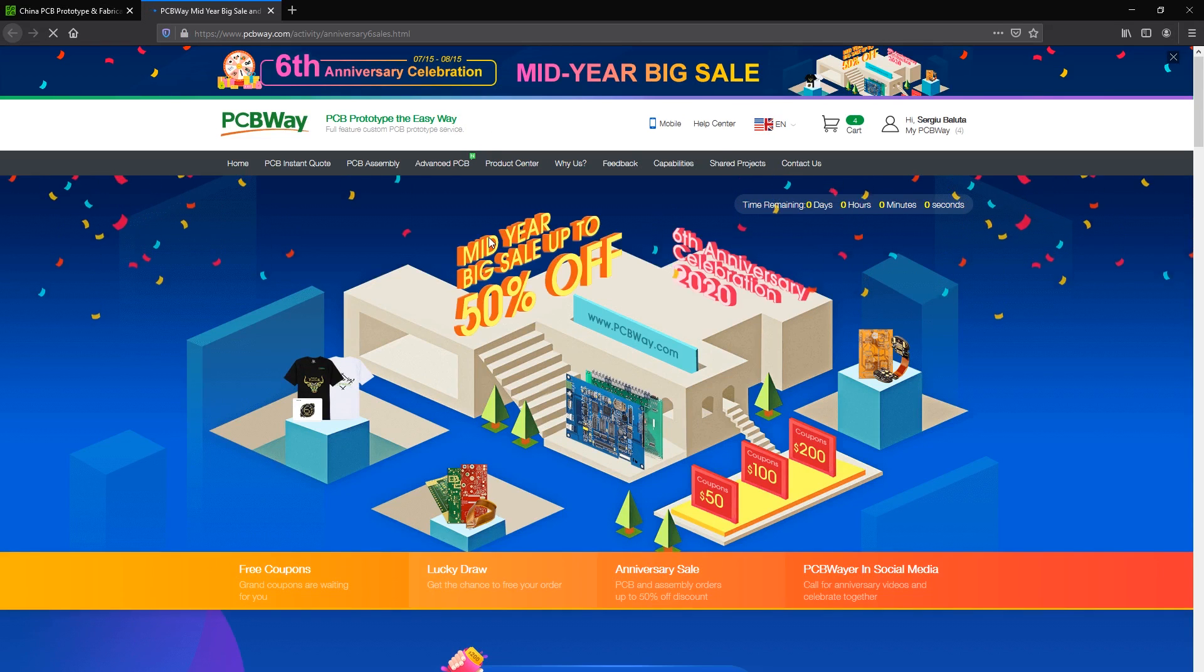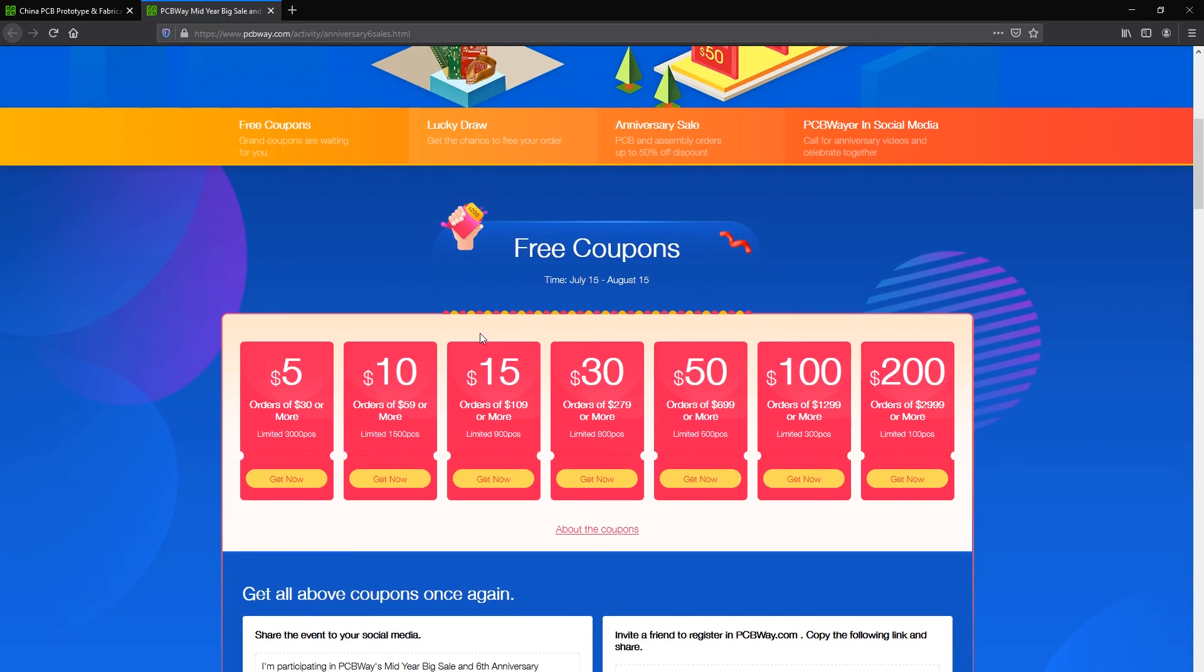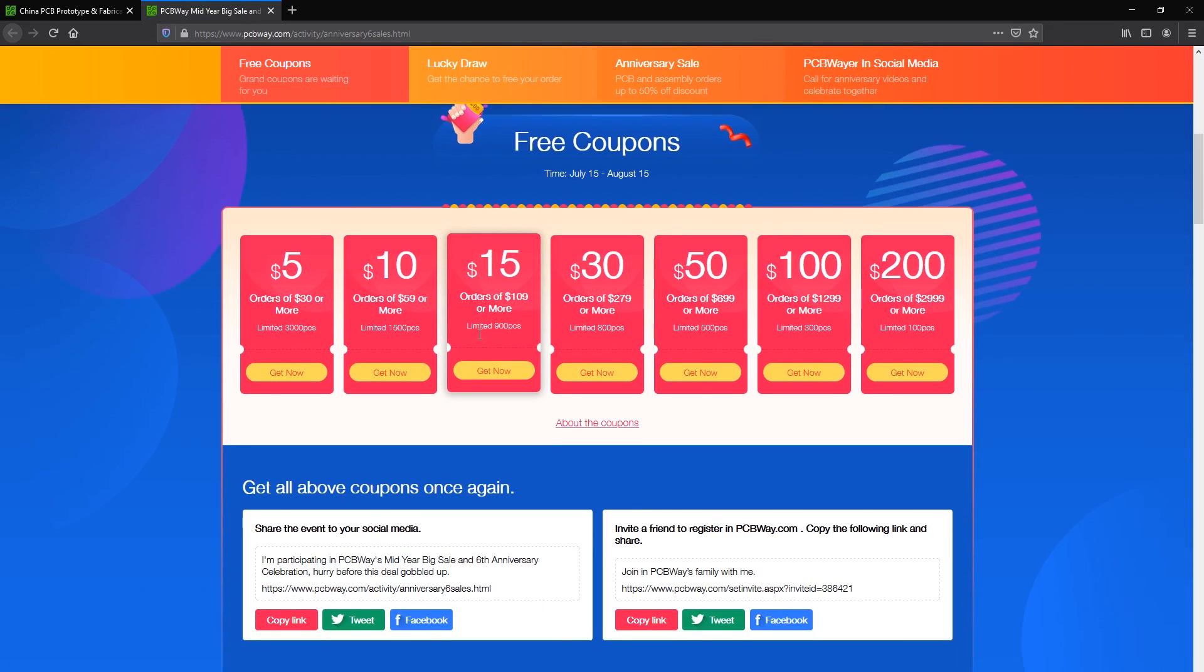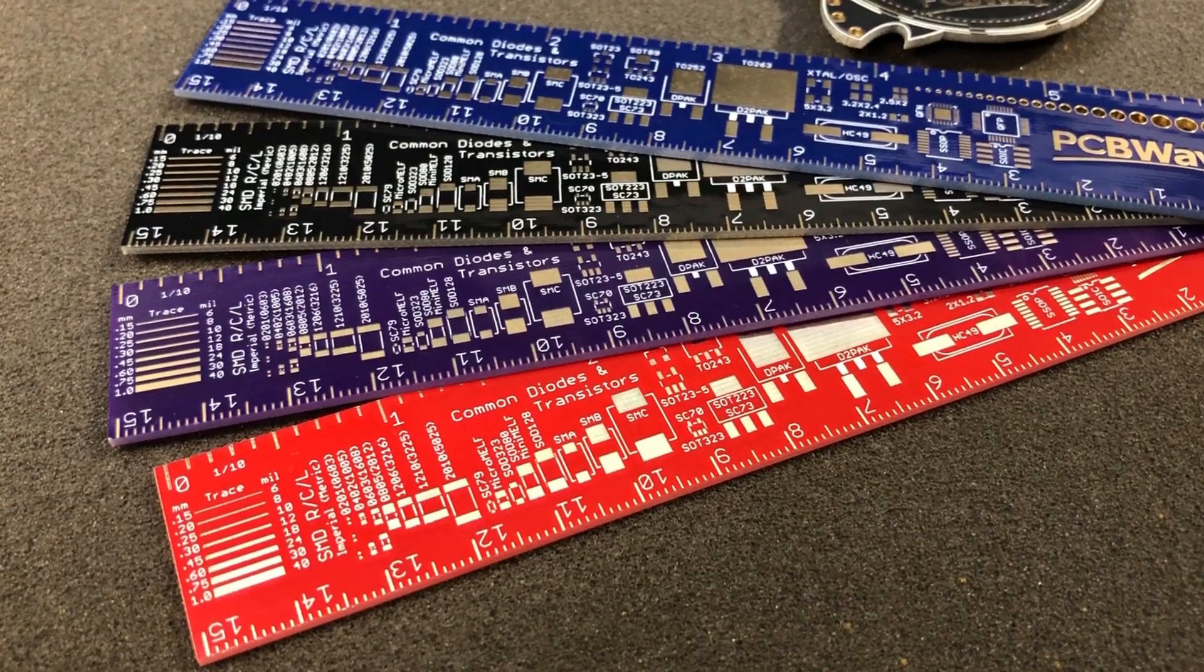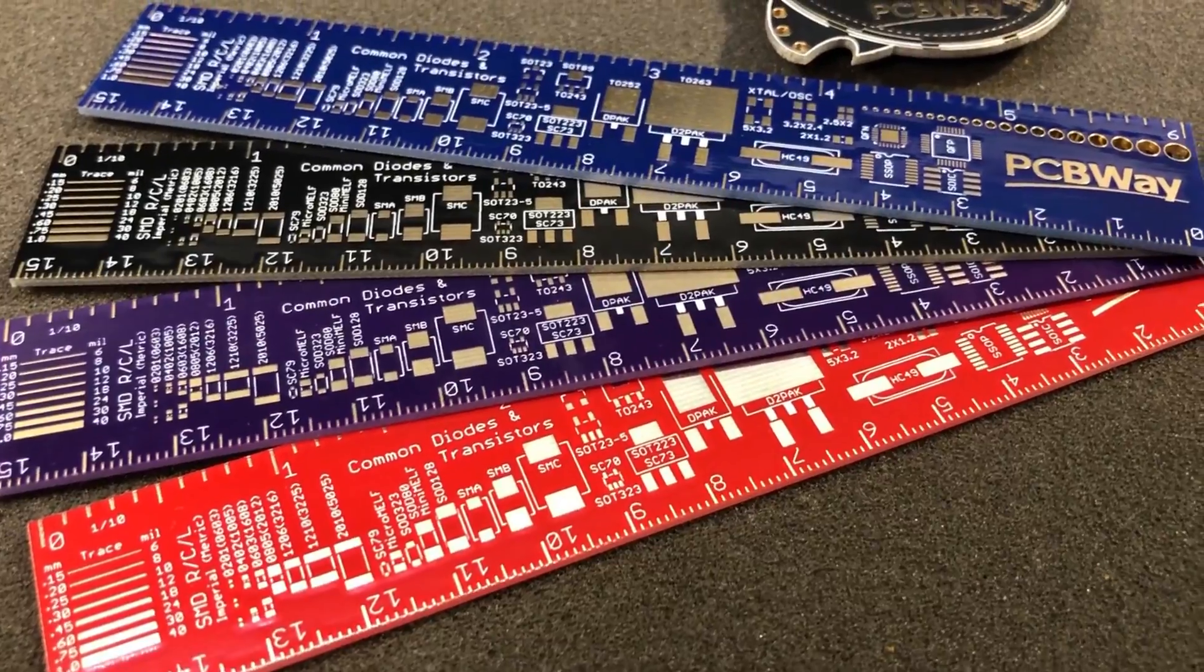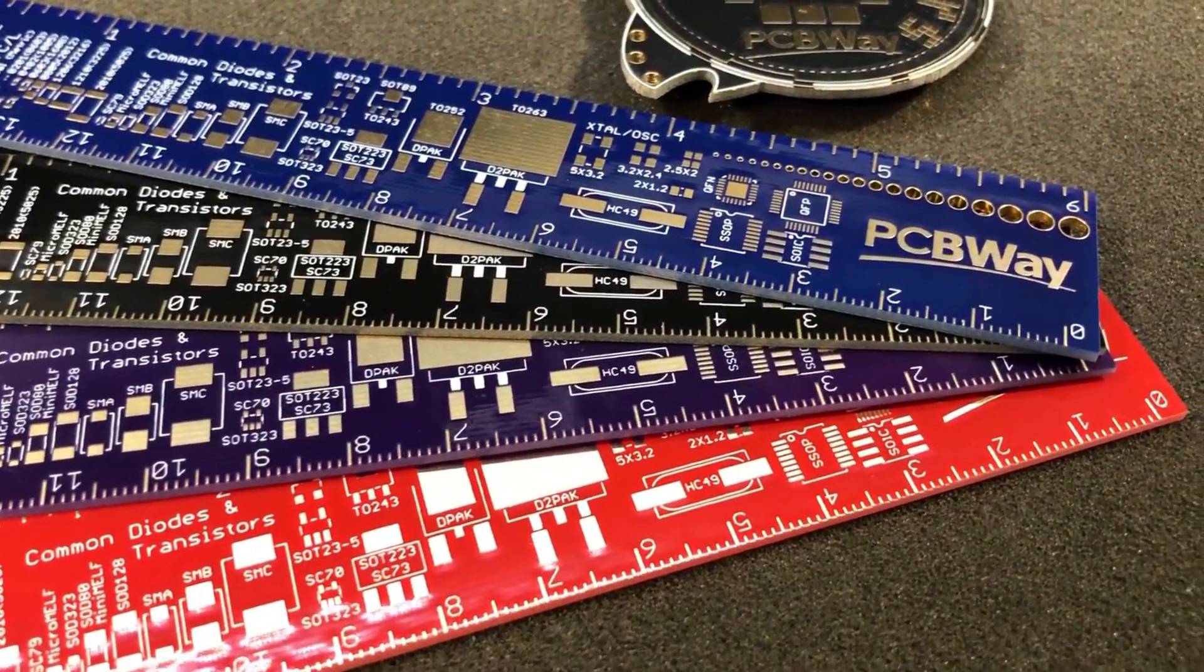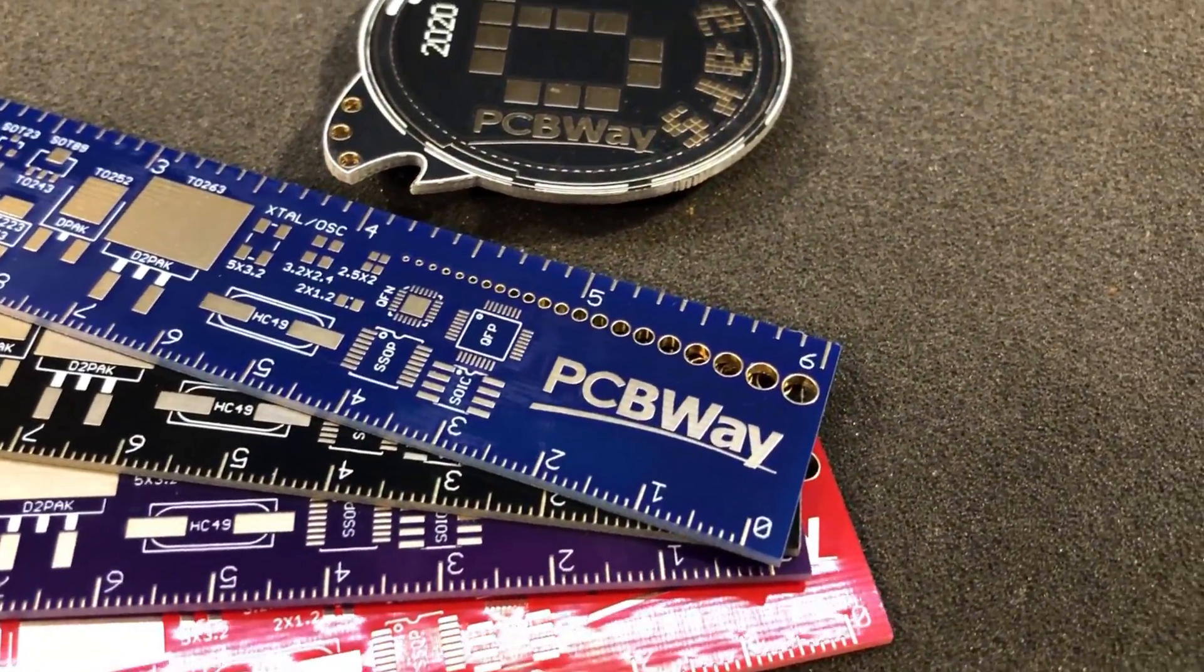PCBWay.com is the place to get your professional PCBs with affordable pricing and right now they are celebrating their 6th year anniversary and that means you can get good discounts on ordering your PCBs with these free coupons available on their website. You can save up to $200 depending on how much your order value is, definitely a good time to be ordering your boards.